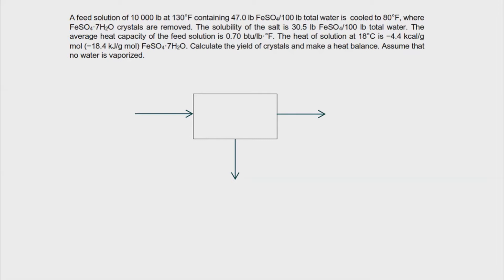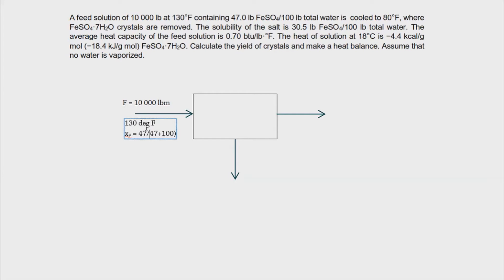Let's start by identifying the given. The feed is 10,000 pound mass, fed at 130 degrees Fahrenheit. It contains 47 pounds ferrosulfate per 100 pounds water. So X sub F, the fraction of ferrosulfate in the feed solution, is 47 divided by (47 + 100), which equals 47 over 147. This is obtained by taking the mass of ferrosulfate and dividing by the total mass, assuming 100 pounds of water.